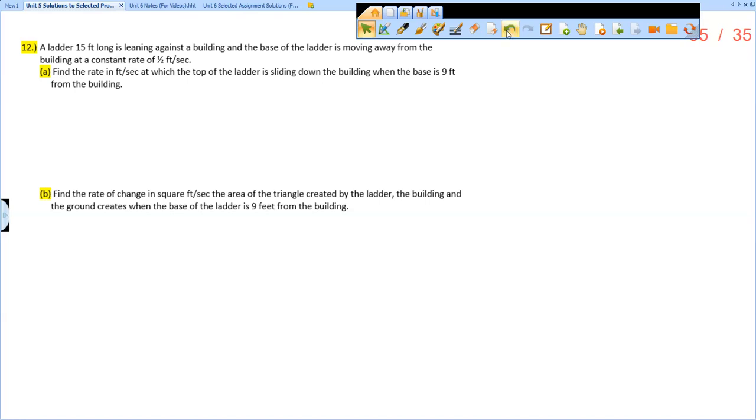This is the solution video for unit 5 review problem number 12. A ladder 15 feet long is leaning against a building and the base of the ladder is moving away from the building at a constant rate of half a foot per second. Find the rate in feet per second at which the top of the ladder is sliding down the building when the base is 9 feet from the building.